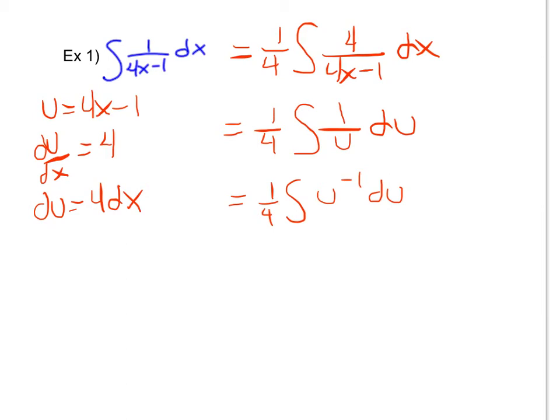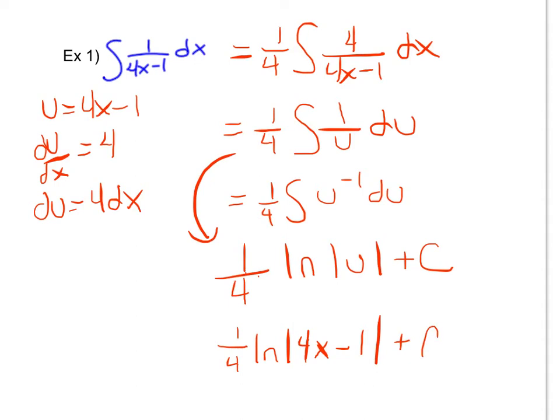And actually, I really didn't even need to bring it to the top because I should have noticed right here that 1 over u should integrate to just be ln absolute value of u. So this was an unnecessary step. So going from here, I get 1 fourth ln absolute value of u plus c. I need to plug my u back in and my final answer is 1 fourth ln absolute value of 4x minus 1 plus c.